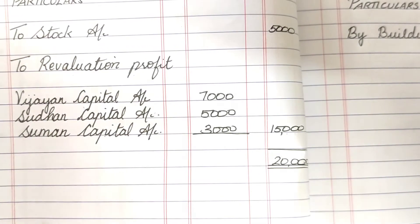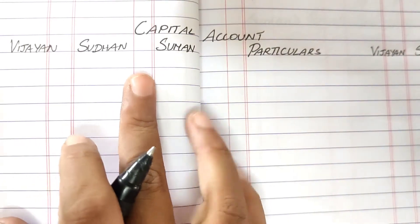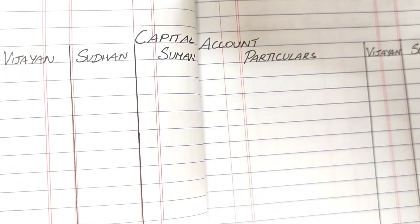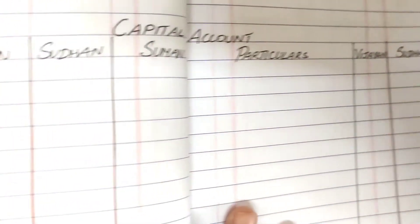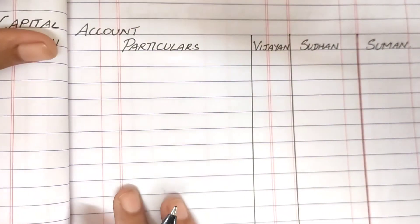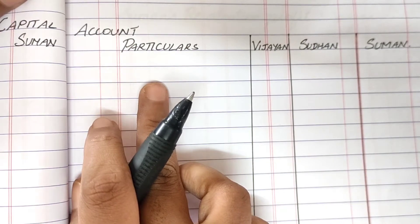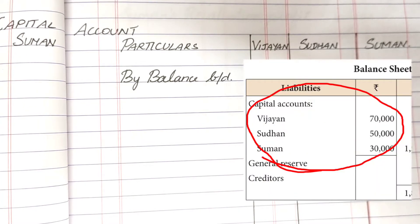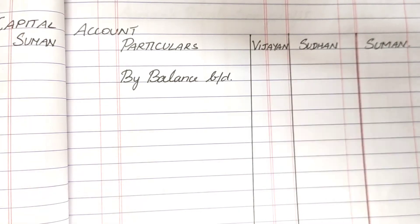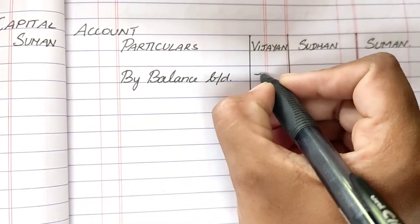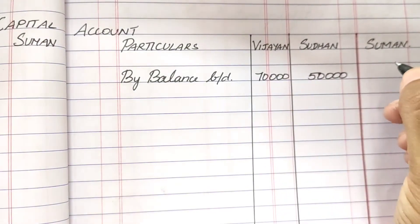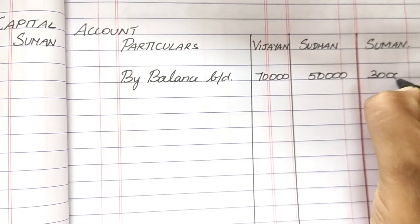We now open the capital account. The format has particulars with partner names as columns. We always start with the credit side since capital account is credited by balance. The first item on the credit side is the opening balance — By Balance b/d — taken from the balance sheet liability side: Vijayan 70,000, Sudhan 50,000 and Suman 30,000.